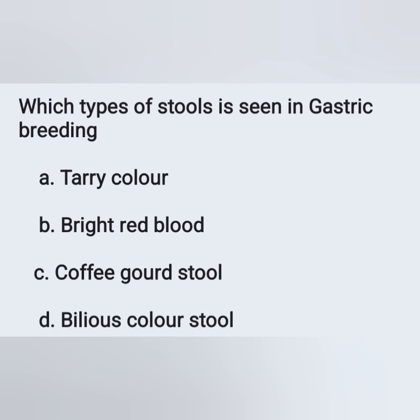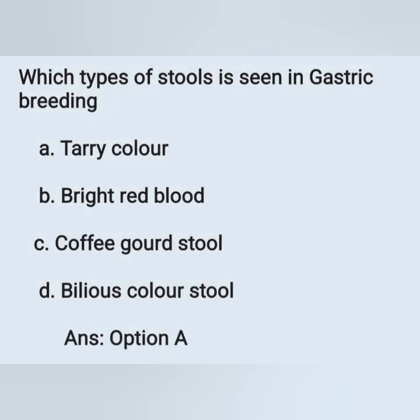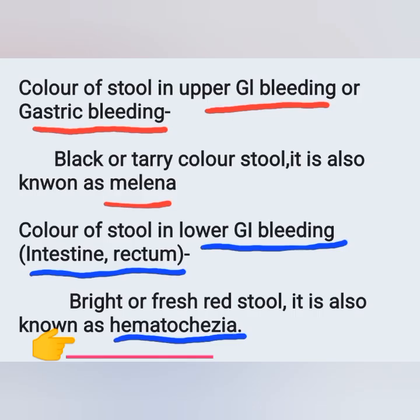The type of stool seen in gastric bleeding is tarry color. Option A is the correct answer. Here we can see the color of stool in upper and lower GI bleeding. In case of upper GI bleeding or gastric bleeding,